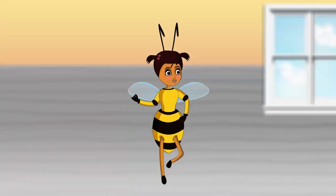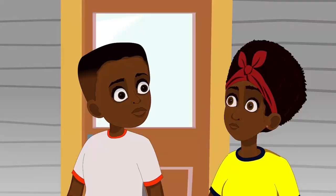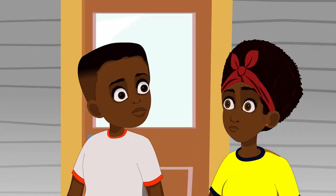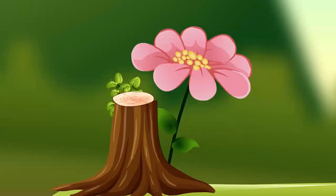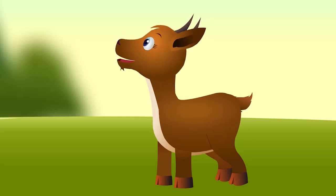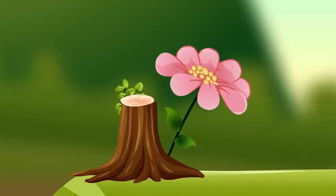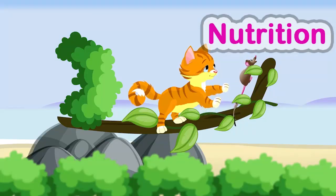In today's lesson, we learnt about the basic structures of animals and plants. Plants have four basic parts and animals have three basic parts. Plants breathe out oxygen; animals breathe in oxygen. Animals breathe out carbon dioxide, and plants take in carbon dioxide. Life processes of living things.